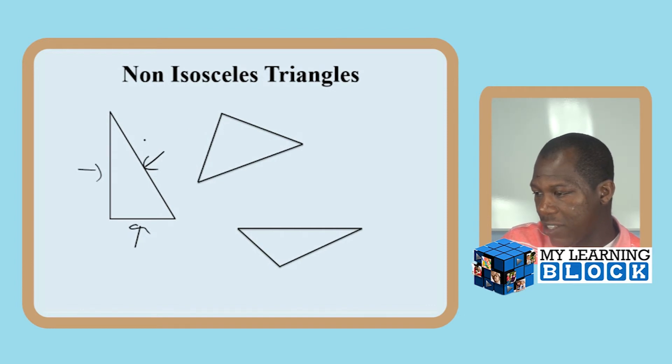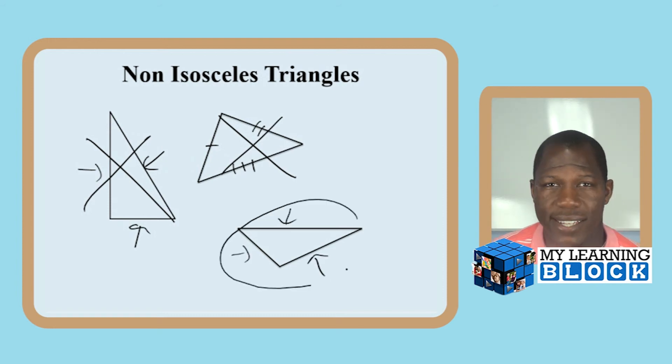This triangle looks a little bit like it could be. However, this side and this side are not equal, nor is that one. Therefore, it is also not an isosceles triangle. And then here we see these sides, all three are not equal as well. So that is not an isosceles triangle.